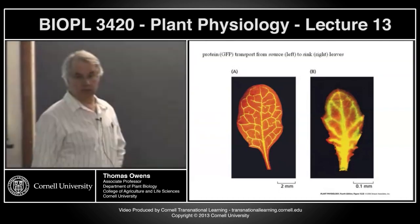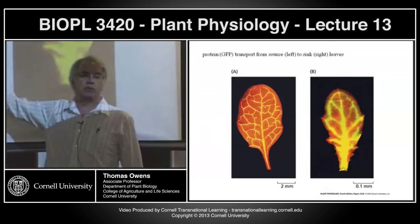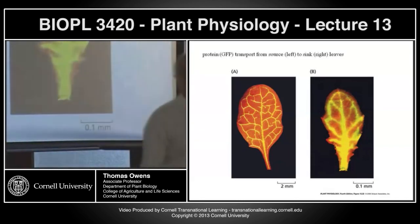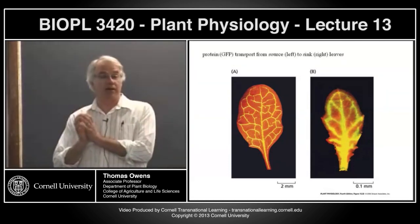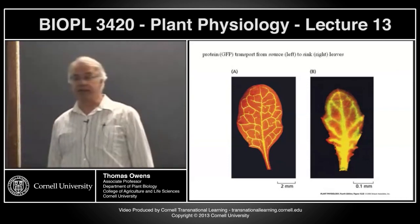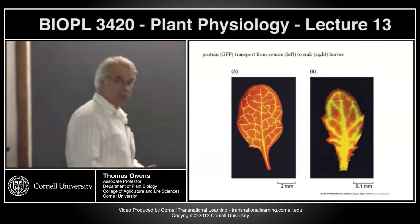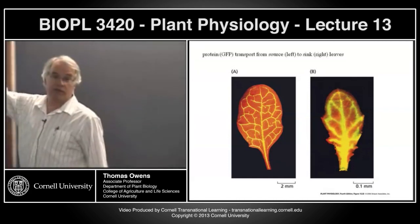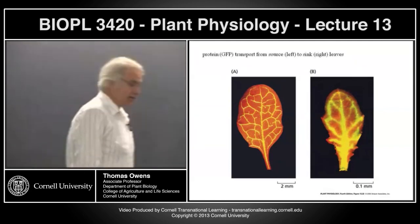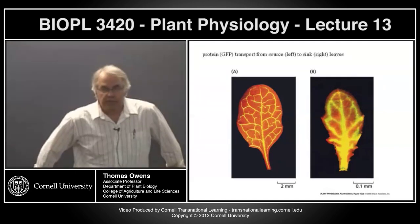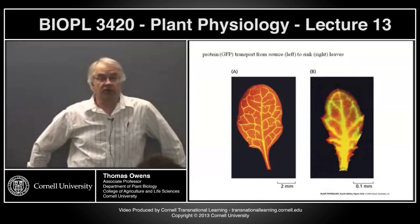A very clever experiment that demonstrated something interesting was to take the small fluorescent protein GFP — green fluorescent protein — and transform Arabidopsis so that GFP was made in the companion cells of mature leaves. It's small enough to fit through the plasmodesmata, get into the phloem, and be transported. You can see where the GFP has been loaded primarily into the major veins of the leaf. Here is a young developing leaf where you're seeing the GFP being unloaded from the major veins. So GFP can be loaded into the phloem, transported through, and unloaded into developing leaves.